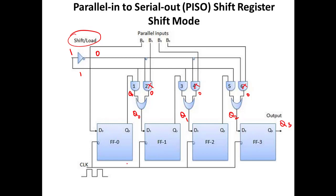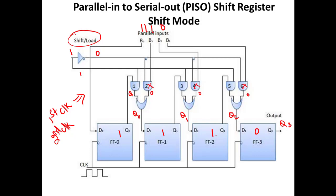During the first clock pulse, all parallel inputs appear and the register is in load mode. For example, if the data is 1010, this data is loaded into the flip-flop in load mode. For the second clock pulse, in shift mode the loaded data will be shifted — Q0 is fed into the second flip-flop, Q1 into the third, and Q2 into the fourth. This is your parallel in serial out shift register.